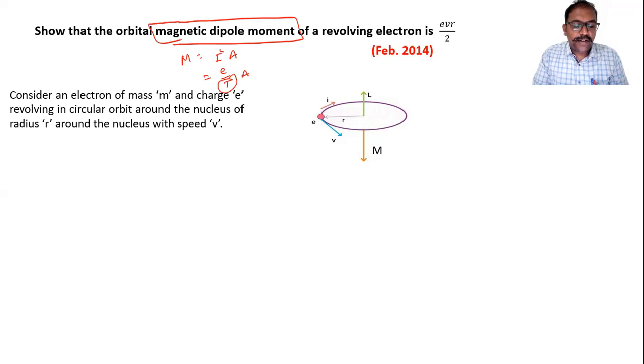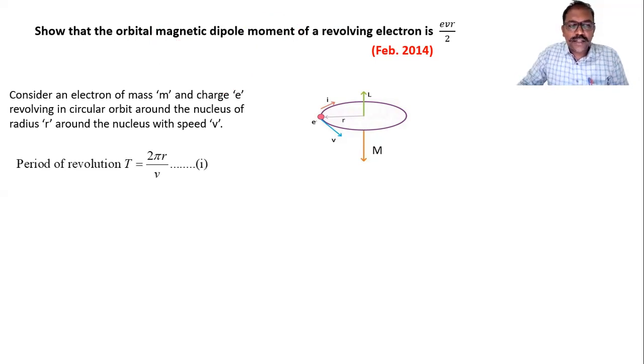Then we find out current by E by T. And then we can find out dipole moment. This is the procedure of the derivation. So here, period of revolution is, so you can see here period formula in circular motion. We already learned this 2 pi R by V.